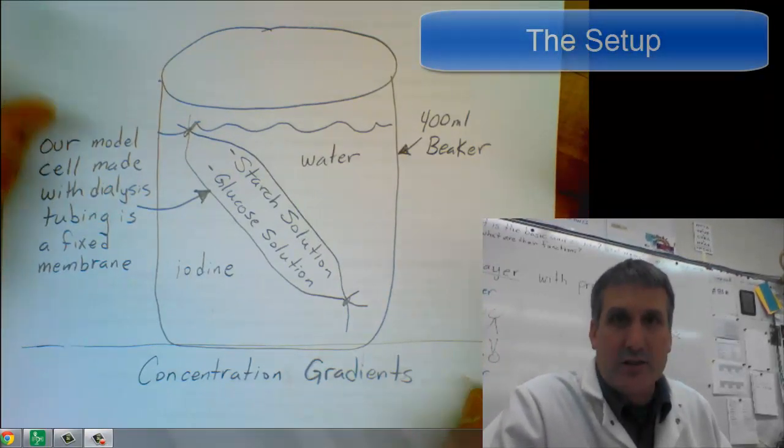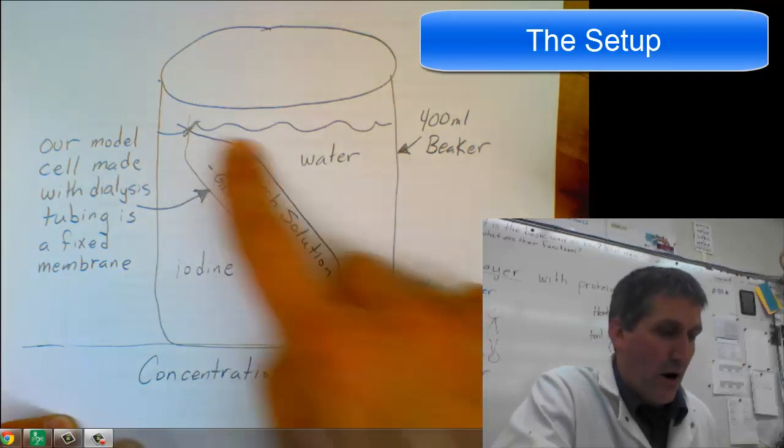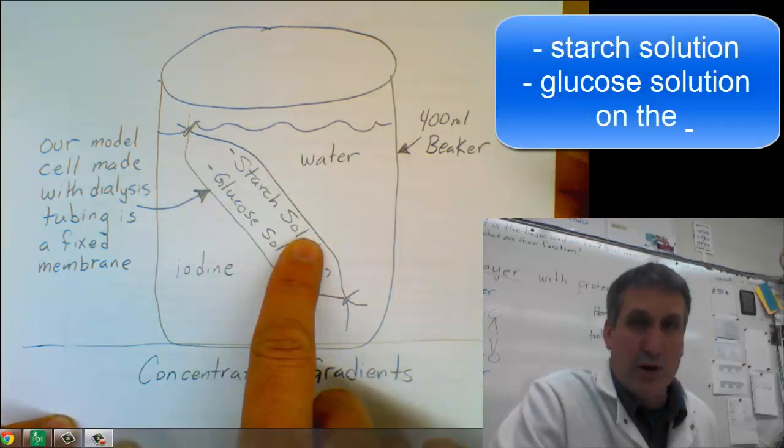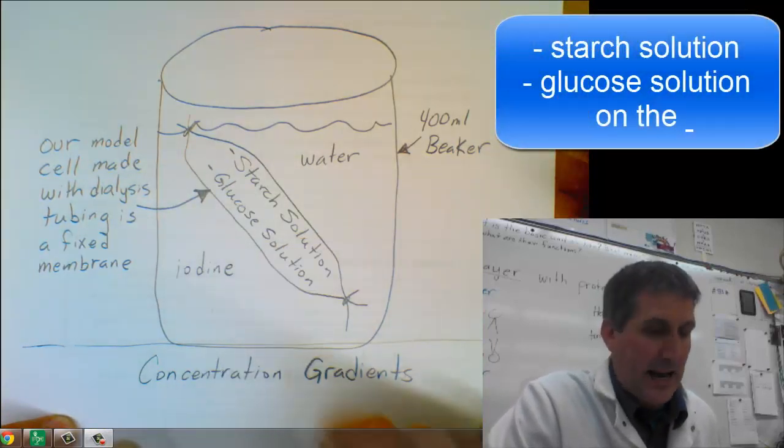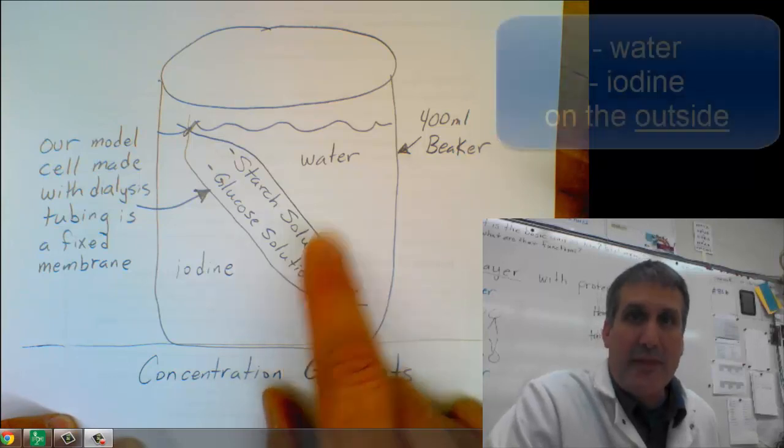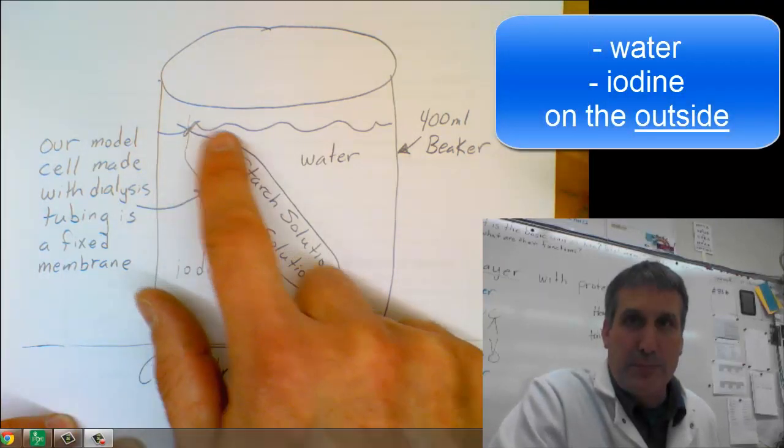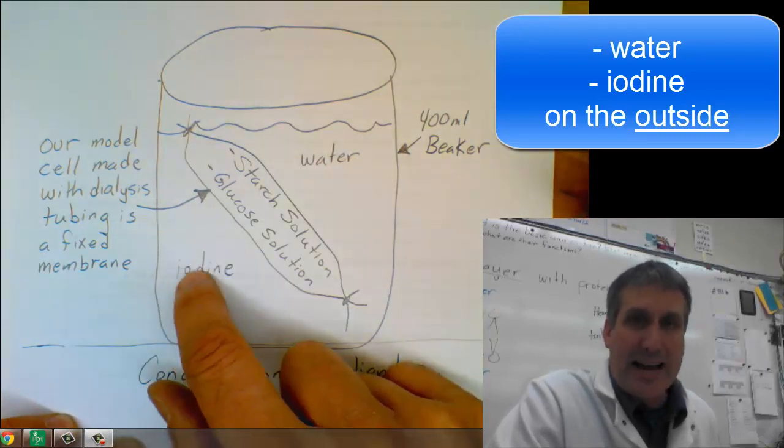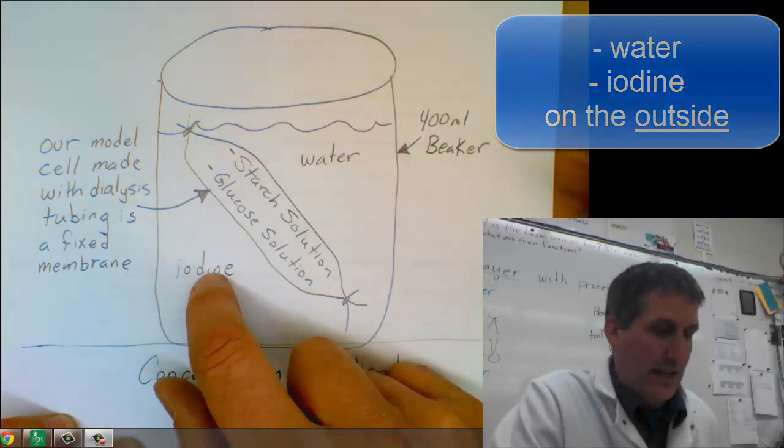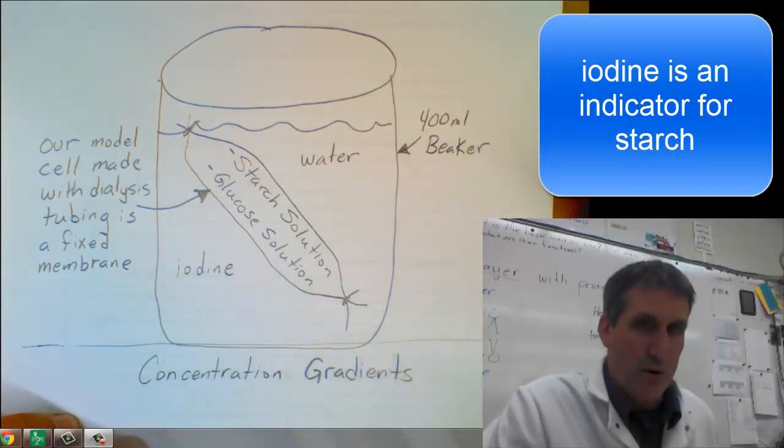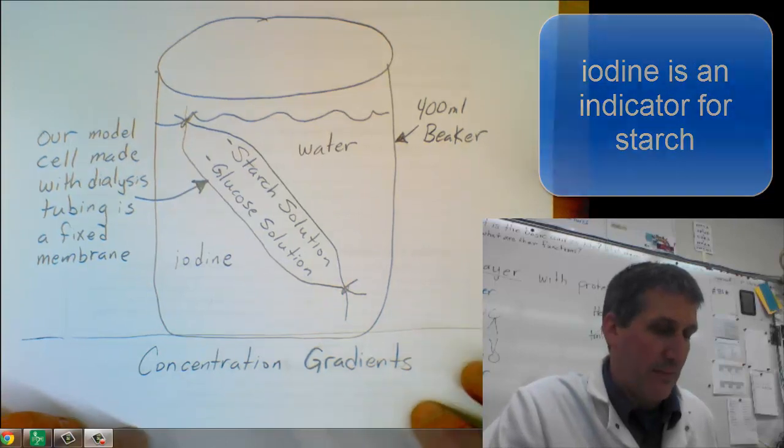Basically, the goal of this is we're going to make our artificial cell made with dialysis tubing. It's a fixed membrane, and we're going to put starch solution and glucose solution inside of our artificial cell. And then on the outside, we're going to fill a beaker, a 400 milliliter beaker, with water. And then we're going to add iodine to the outside of the cell. Iodine is actually an indicator for starch, and that will be important during this lab, so keep that in mind.